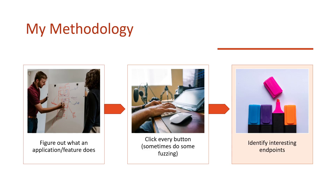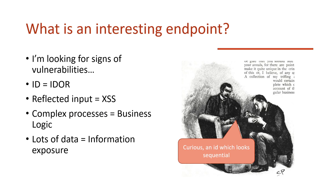Identifying interesting endpoints really comes with either a lot of years as a developer — realizing what you messed up in your own code — or a lot of time hacking to realize what other people messed up. CTFs can also help teach this skill, and really it's about intuition more than anything else. So what is an interesting endpoint? I'm looking for signs of vulnerabilities. There's an ID — I'm thinking IDOR. There's a reflected input — I'm thinking XSS. There's a complex process — I'm thinking business logic. I'm seeing a lot of data coming out of the API — I'm thinking information disclosure. I'm tailoring my response to what I see, not testing blindly. I'm making sure I know why I'm testing for a certain vulnerability. An ID doesn't necessarily mean there's an IDOR — it means there could be one.